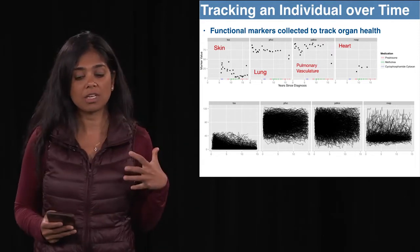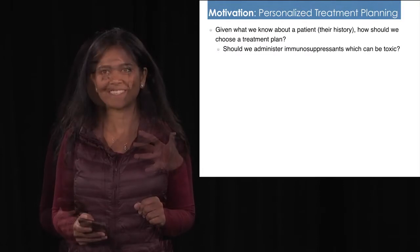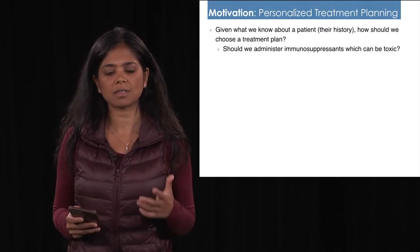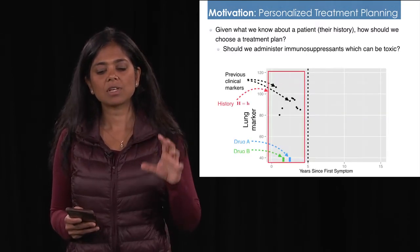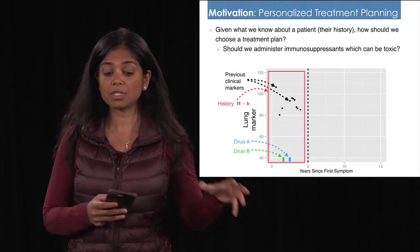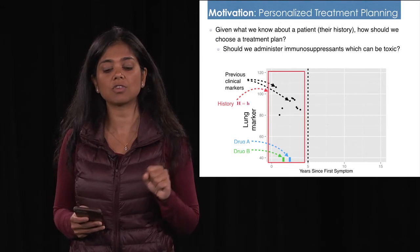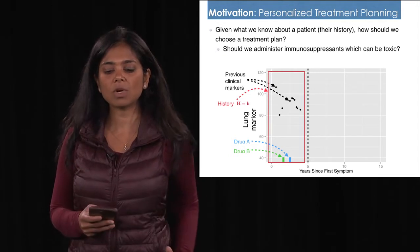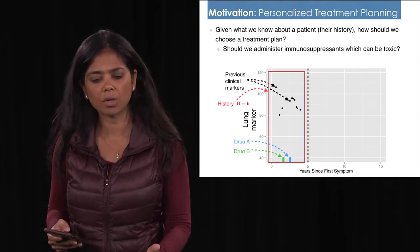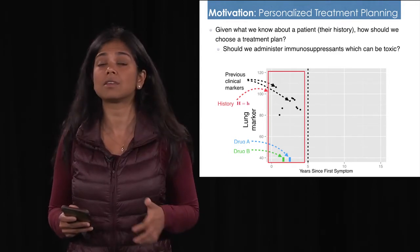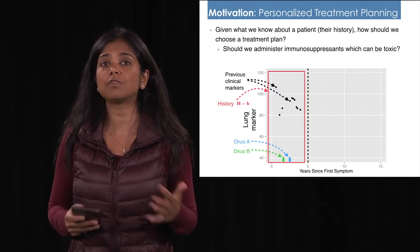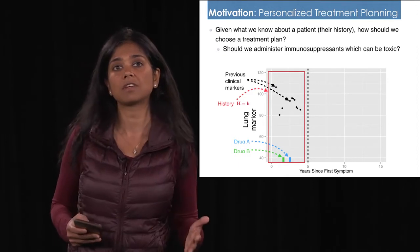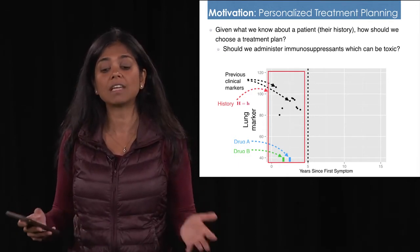You collect this not just on an individual but on a large population. For scleroderma, here is a concrete example of the kinds of decisions clinicians have to make. Here's a patient — you've observed that they've received some drugs and you've seen values of certain markers collected over time. Standing at year five, given what you've seen thus far, how should you choose a treatment plan going forward? One concrete thing is figuring out which immunosuppressant to administer, trading off efficacy versus the degree of side effects the patient can handle.